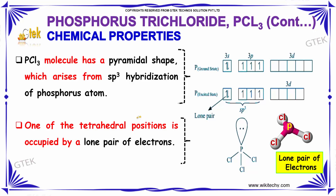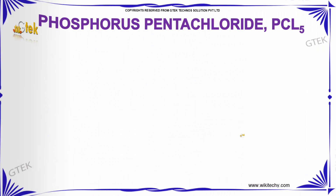Regarding the structure of PCl₃, the molecule has a trigonal pyramidal shape, which arises from sp³ hybridization of the phosphorus atom. One of the tetrahedral positions is occupied by a lone pair of electrons.